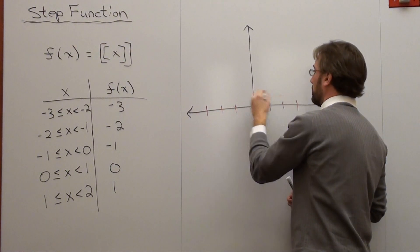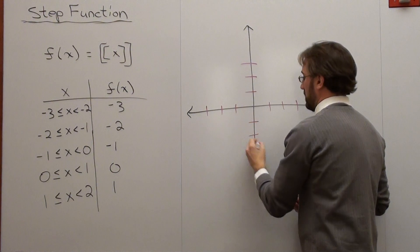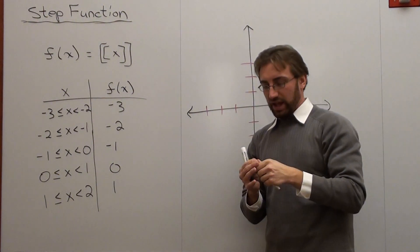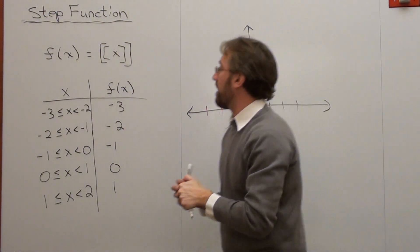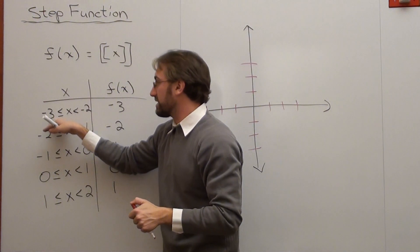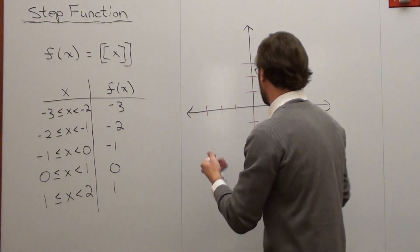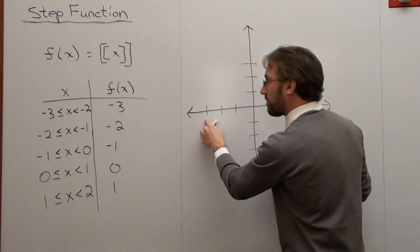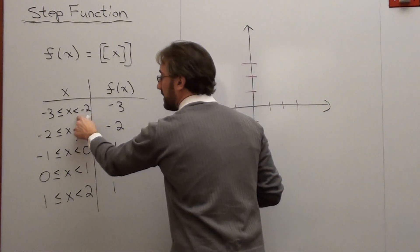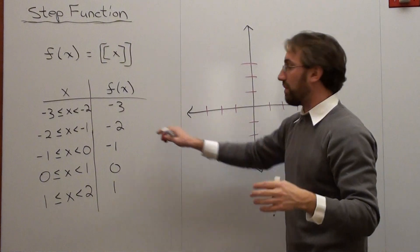So I have my little graph here, and what it's saying is this. For everything in x that's less than or equal to, if x is greater than or equal to negative 3, pardon me, so I'm at negative 3, and it's less than negative 2, here's what my y value is.